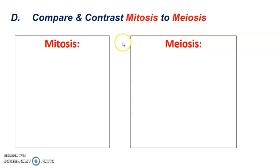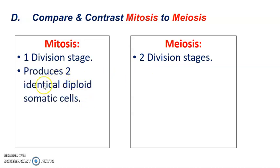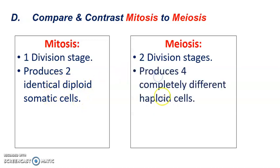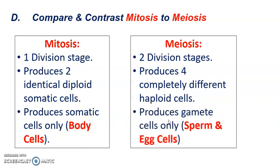Quick overall compare and contrast: in mitosis, there is one division stage — PMAT. In meiosis, we have two division stages: PMAT I and PMAT II. Mitosis produces two identical diploid somatic cells. In meiosis, we're producing four completely different haploid cells. Mitosis only produces identical somatic cells, which are also called body cells, and in meiosis we're producing gametes, which are sperm and egg cells.